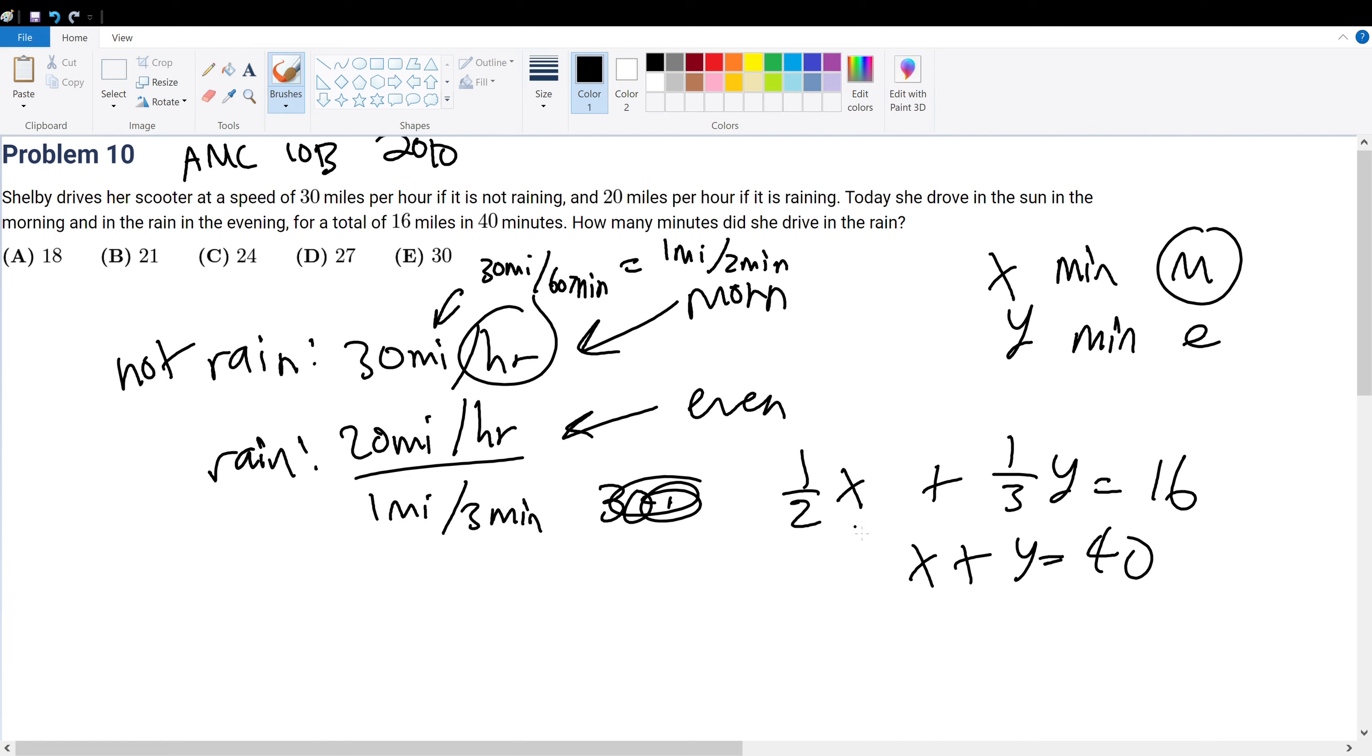First of all, we can multiply 6 for this equation to give 3x plus 2y equals 96. And then if we multiply 2 on the other equation, that would be 2x plus 2y equals 80. And then if we subtract this with this, then we'll get x is equal to 96 minus 80, which gives 16.